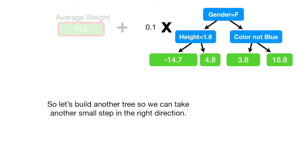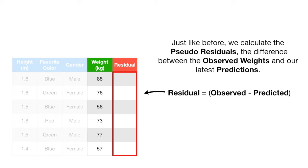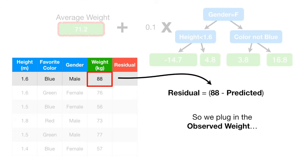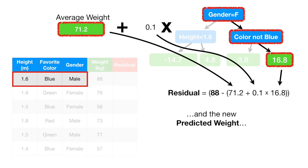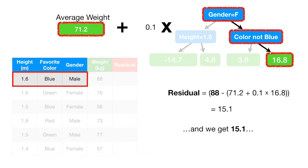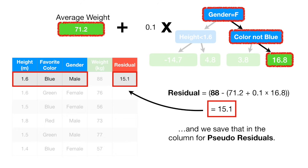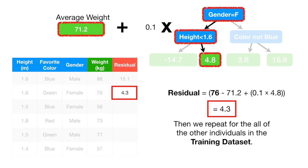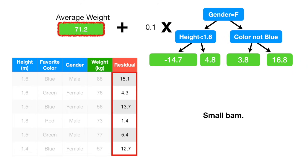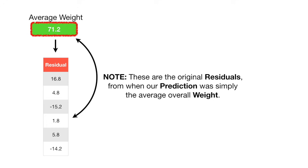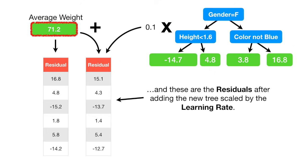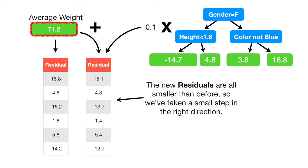According to Jerome Friedman, the inventor of Gradient Boost, empirical evidence shows that taking lots of small steps in the right direction results in better predictions with a testing data set — i.e., lower variance. So let's build another tree to take another small step in the right direction. Just like before, we calculate the pseudo-residuals: the difference between the observed weights and our latest predictions. We plug in the observed weight and the new predicted weight, and we get 15.1, and save that in the pseudo-residuals column. Then we repeat for all of the other individuals in the training data set.